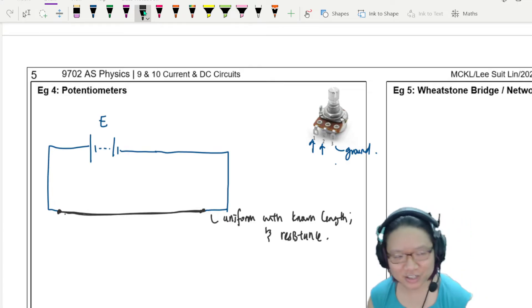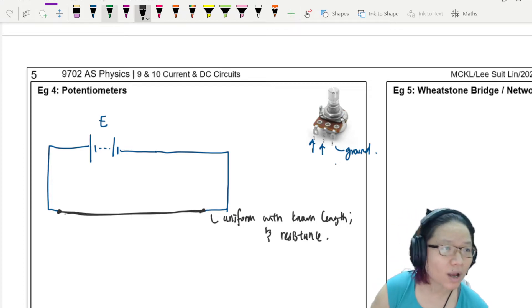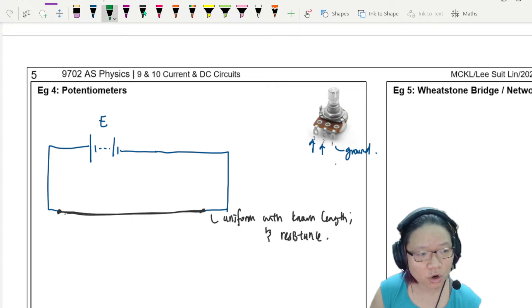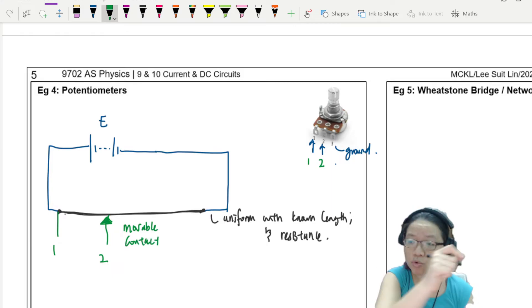So think about how this is different than our regular potential divider circuit. For our potential divider circuit, instead of having a wire like this, we would have a bunch of resistors. But now, we have a fixed wire. Can we change the potential? Yes. What I need to do is actually to connect one end of the wire here. And maybe here is my movable contact.